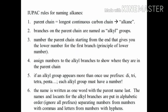Here is another set of IUPAC rules. Parent chain: choose the longest continuous carbon chain, as in alkanes. Branches on the parent chain are named as alkyl groups. Number the parent chain starting from the end that gives the lower number for the first branch. Assign numbers to the alkyl branches to show their position. If any alkyl group appears more than once, use prefixes: di, tri, tetra, penta, hexa, hepta.